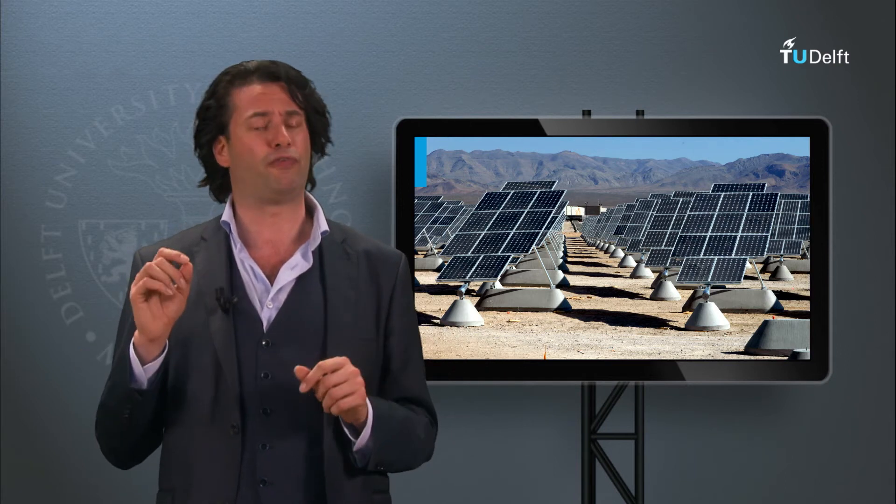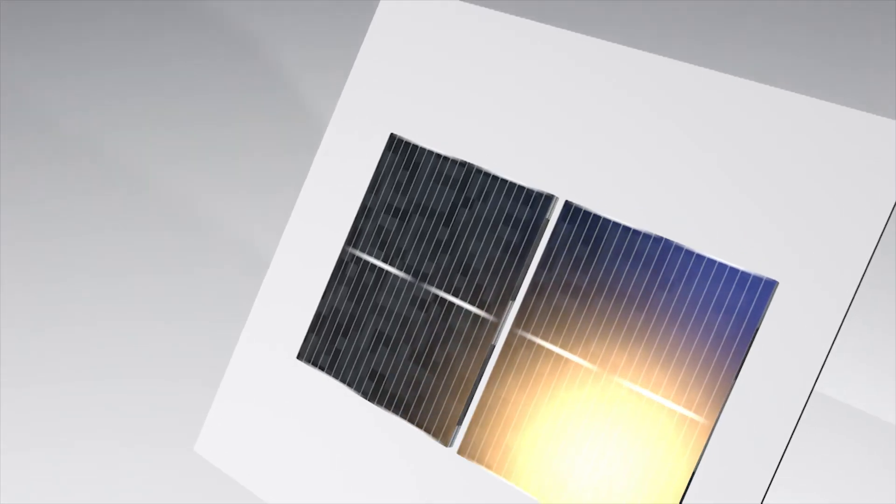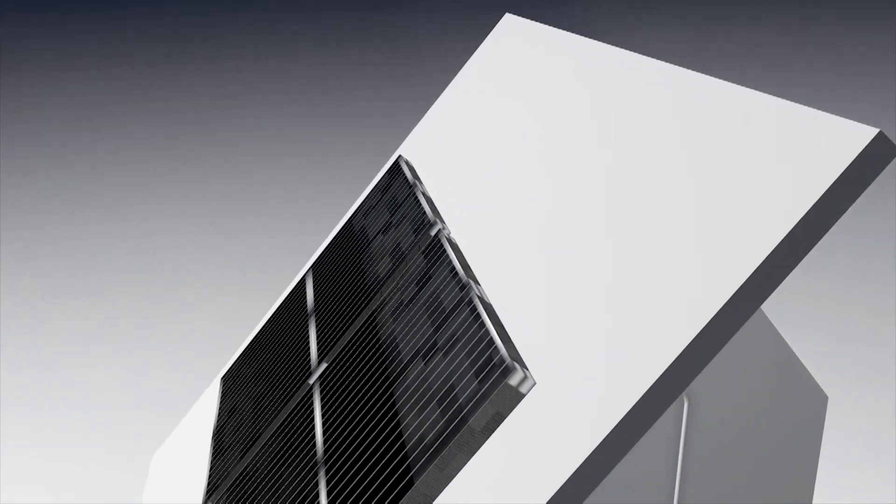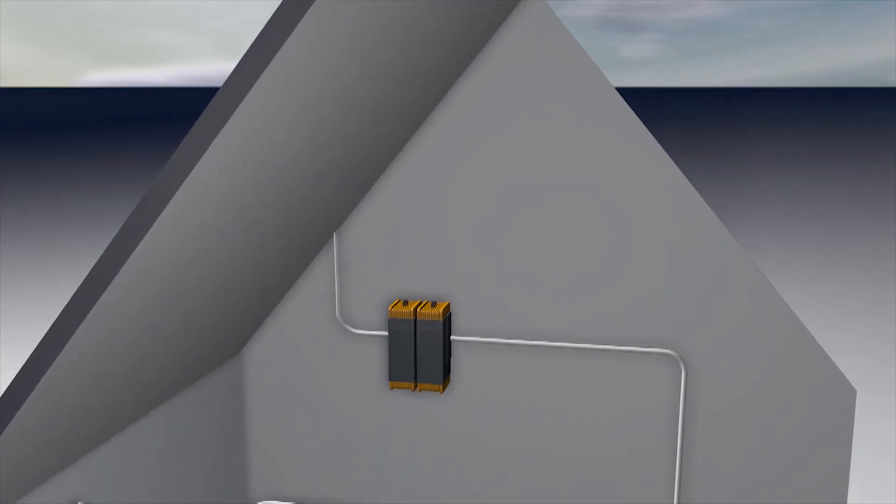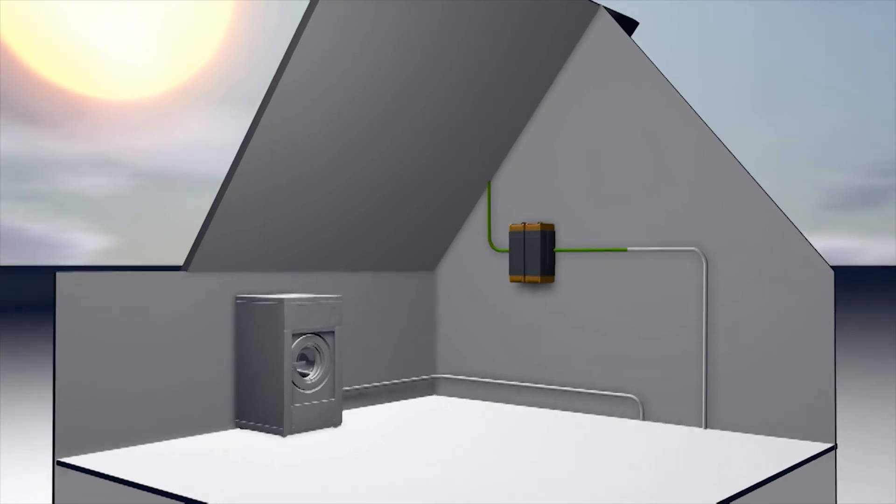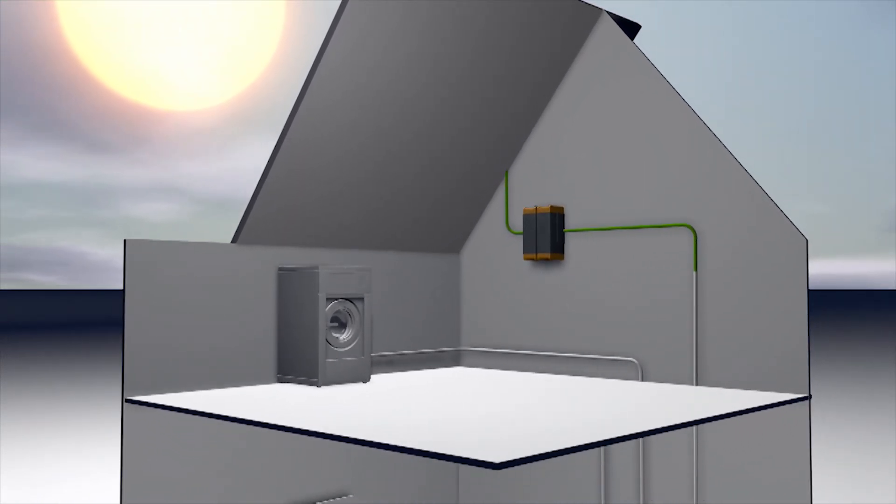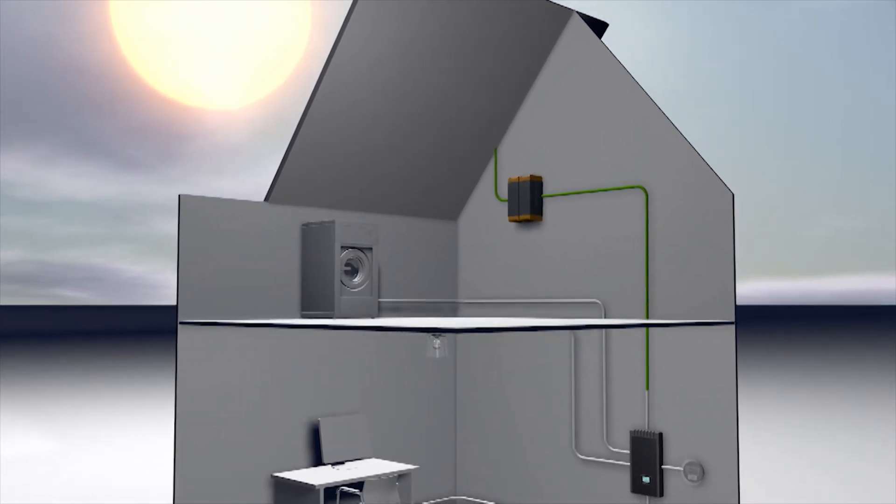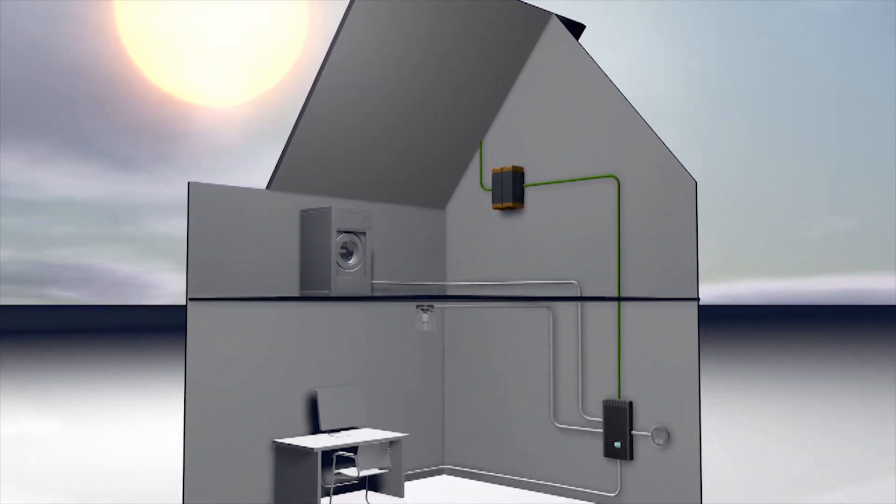Let us understand this in the following animation. On a normal day with the sun out, the PV modules on top of this rooftop are busy converting the incoming irradiance into photo-generated power. The grid-connected solar inverters are also constantly converting the DC output of the solar modules into usable AC power.